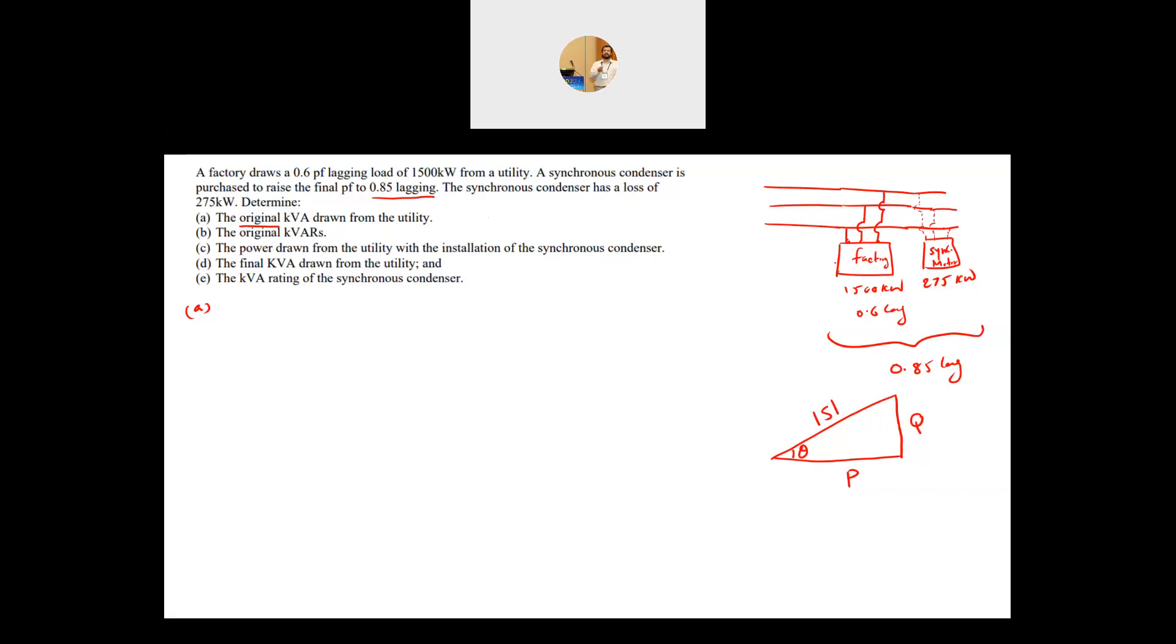Part A says what is the original kVA drawn from the utility. When you say the word original it means that before adding the synchronous condenser. So when the system was working with only the 1500 kilowatt at 0.6 power factor lagging. So you want to find basically S. And from the power triangle cosine theta is P over S or the power factor is P over S, so your S is equal to P divided by the power factor as simple as that, which is 1500 kilowatt divided by 0.6 and this will give me 2500 kVA. This is the first part.